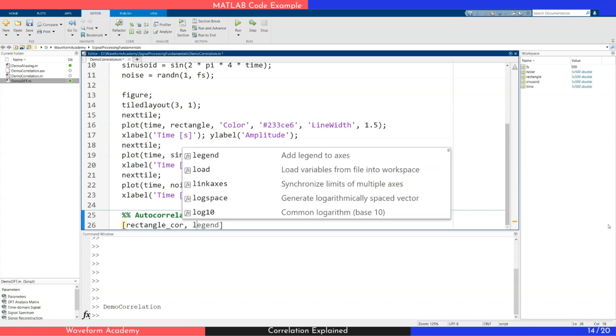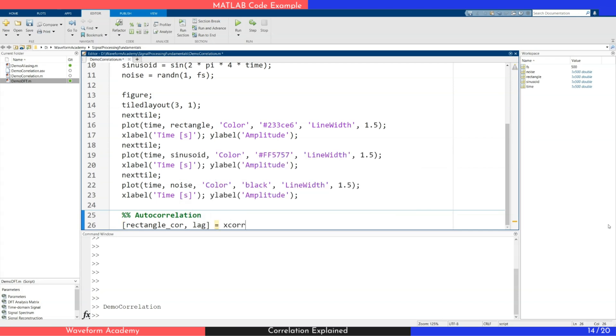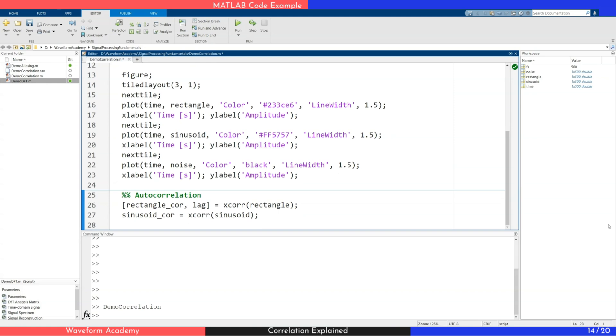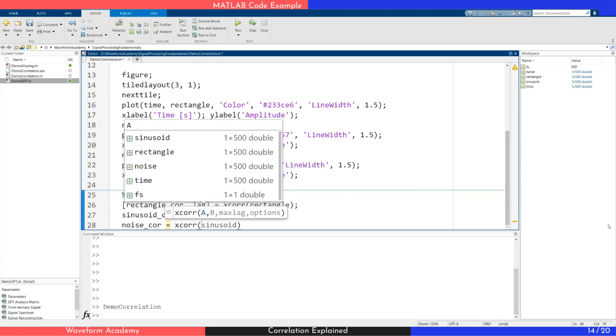Along with a lag vector, when a single signal is passed. We repeat the process for the remaining signals. Since the lag vector is the same for all, we can omit it in subsequent calls.